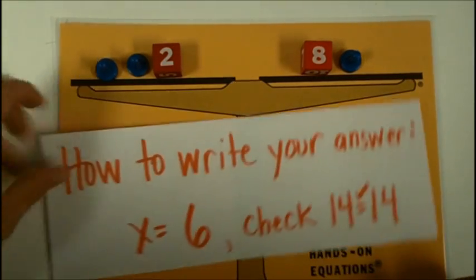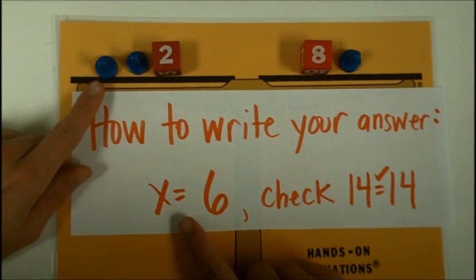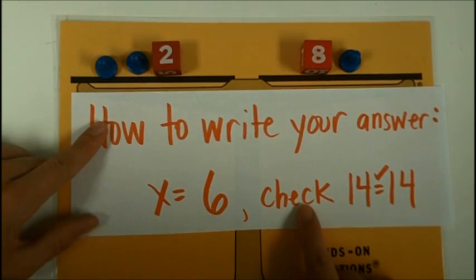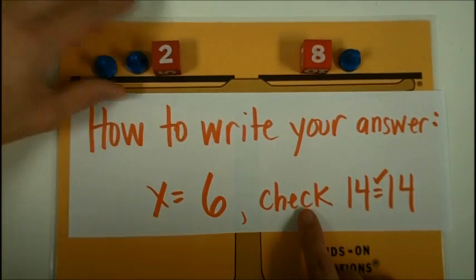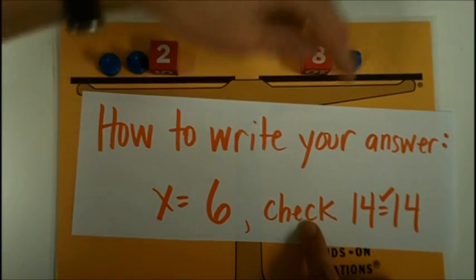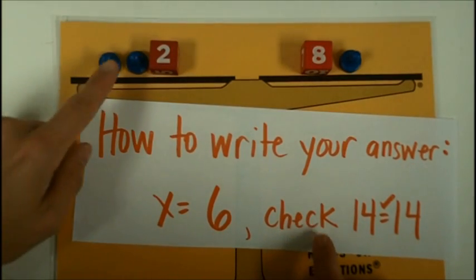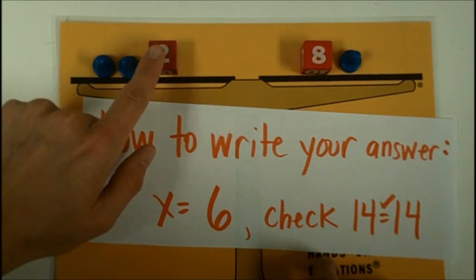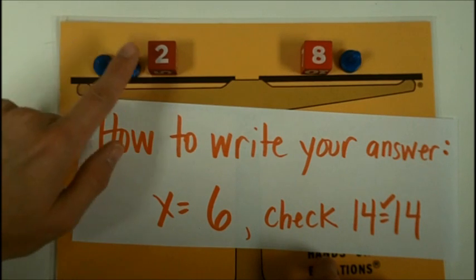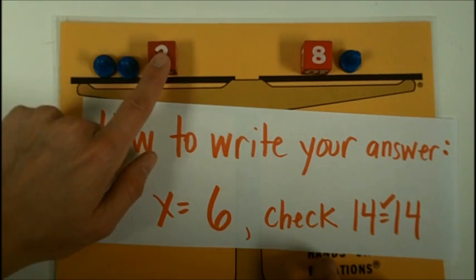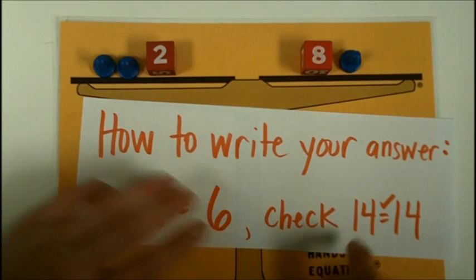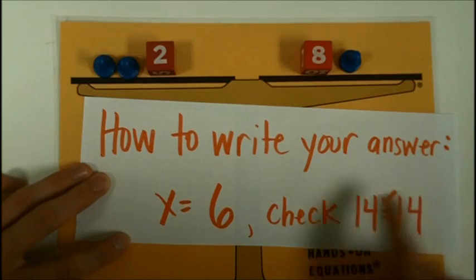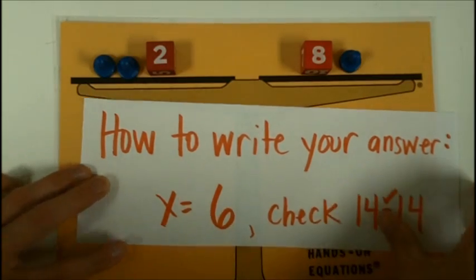When we would write our answer, we would say this. The pawn, we're now going to call x, the variable x. The x equaled 6. And we would do it by checking it by saying what this whole side of the equation is worth and this whole side of the equation is worth. So, I did 6, 12, 14. 6 plus 6 is 12 plus 2 more is 14. Over here, 8 plus 6 is 14. So, I wrote 14 equals 14. And since that's true, I put a small little check. So, you have to do this for every single answer.